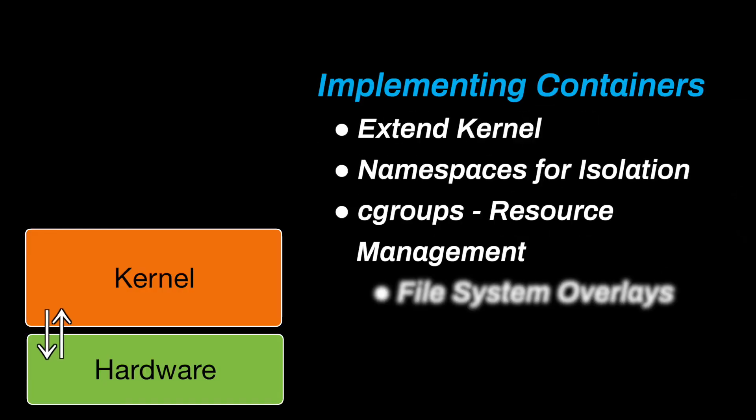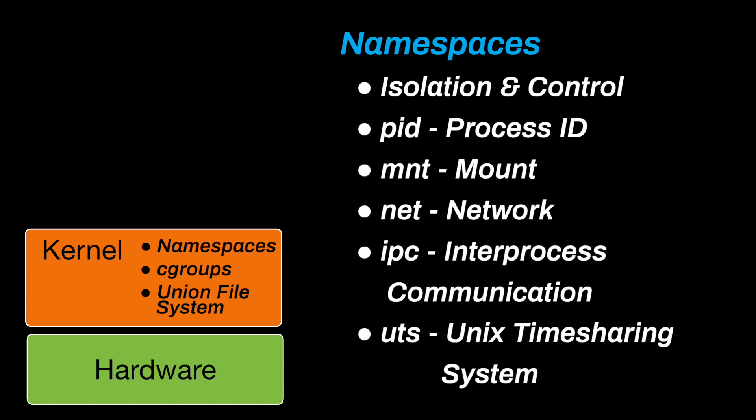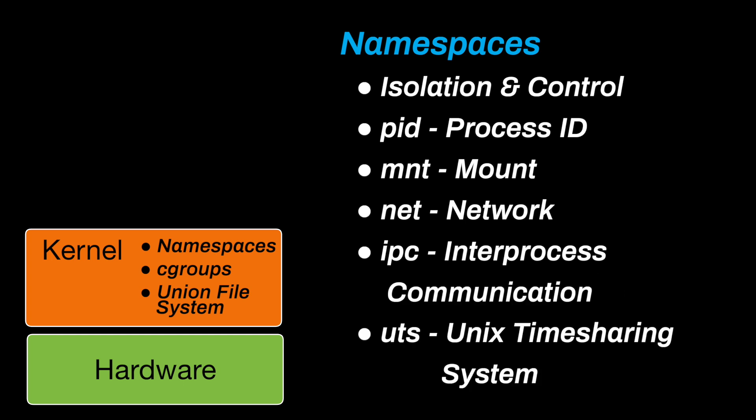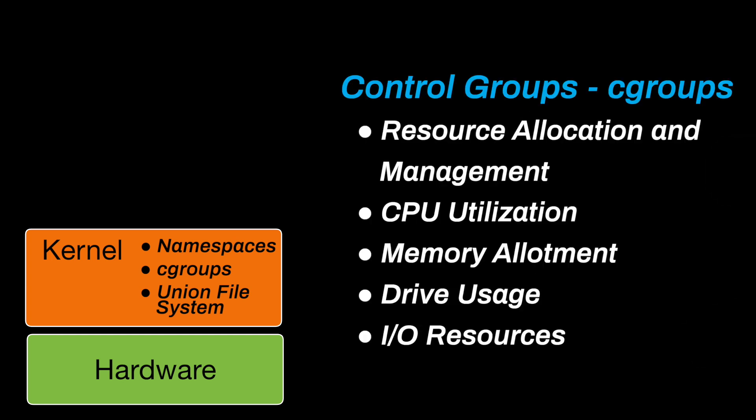Now let's talk about how containers are implemented. We have our kernel running on top of our hardware. A namespace isolates system resources, allowing processes to have their own independent view of resources like process IDs, network interfaces, and file systems. This isolation is essential for creating secure and separate environments, ensuring processes remain isolated from one another. Control Groups, or cgroups, are a mechanism that allocates and manages system resources like CPU, memory, and I/O for processes. They ensure that processes within a container receive their designated share of resources, preventing any single process from consuming more than its allocated amount, thereby maintaining system stability.